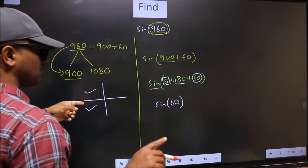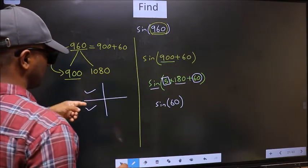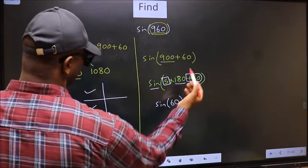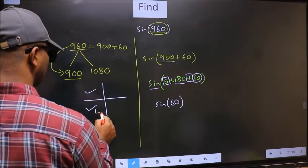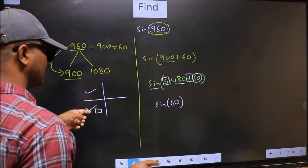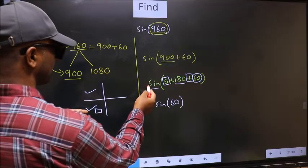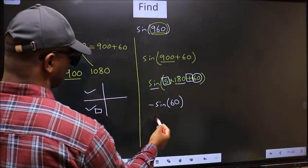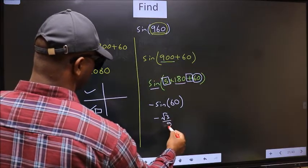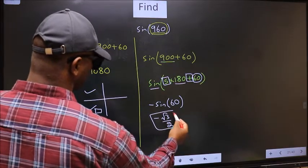So now to select the quadrant, we should look at this symbol. Here we have plus. That means angle lies in the third quadrant. And in the third quadrant, sin is negative. So we should put negative. So negative sin 60 is root 3 by 2. This is our answer.